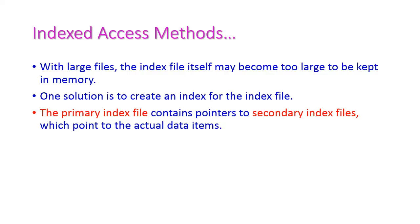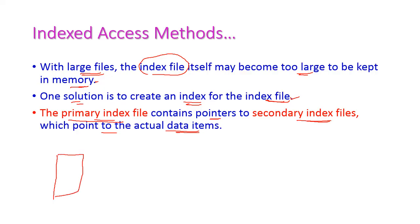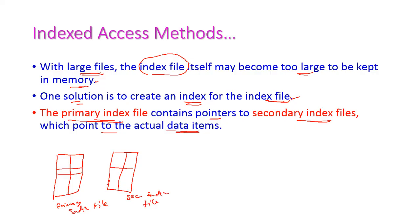If the file size is very large, then the index file itself will become too large to keep in memory. In that situation, we have to create an index for the index file — an index of index. The primary index file contains pointers to a secondary index file, which points to the actual data item. The primary index file contains the index and pointer for the secondary index file, and this pointer then points to the original record in the data.